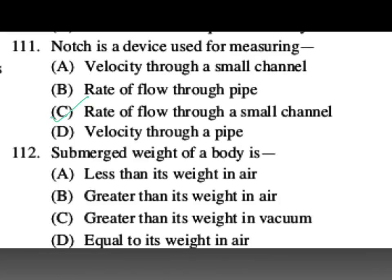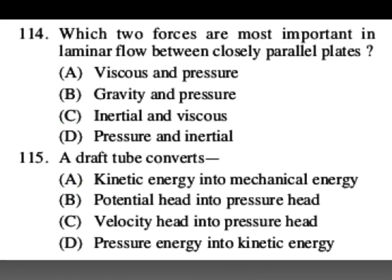The apparent weight of a body submerged in fluid: the force of buoyancy acts upwards and weight acts downwards. Apparent weight W' = W − F_b, so weight in fluid is less than weight in air.